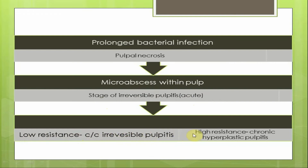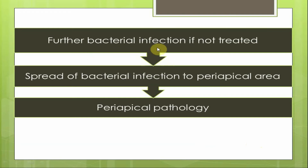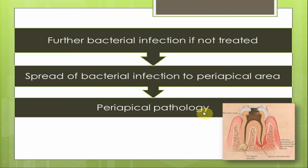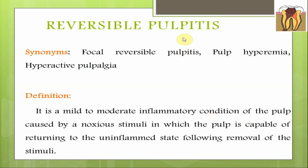Two things may then happen: if the pulp has very low resistance, it will lead to a stage of chronic irreversible pulpitis. If the pulp is highly resistant - for example in young individuals where the pulp is very active - it will lead to chronic hyperplastic pulpitis. This chronic process may continue until most or all of the pulp is involved, ultimately leading to its death. The organisms may be killed, but more commonly they survive and set up a reaction in the periapical tissues, entering through the apical foramen to cause periapical pathology.